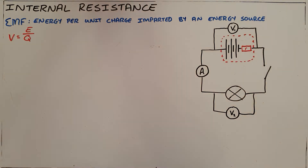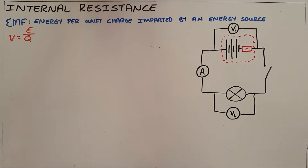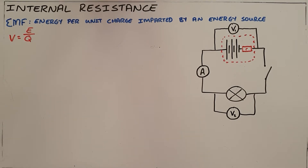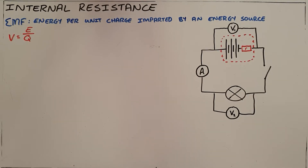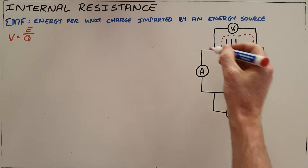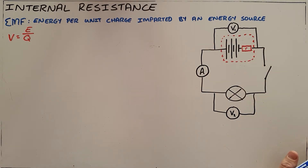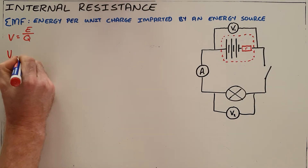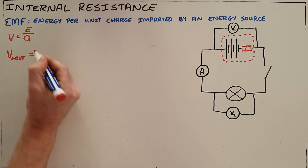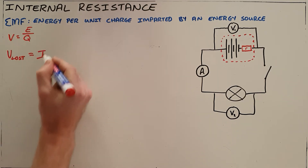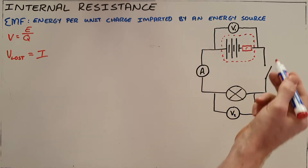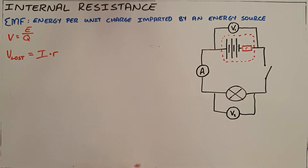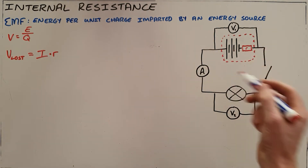We say the resistance is included inside the battery, and internal resistance is denoted with a lowercase letter r. Because that internal resistance is within the battery, any energy used inside that battery is considered lost because it is not able to be used in the external circuit. We call the voltage lost to internal resistance the 'lost volts,' which equals the current passing through the battery multiplied by the internal resistance.